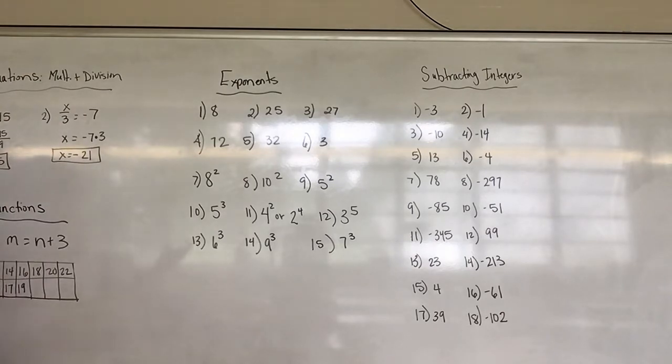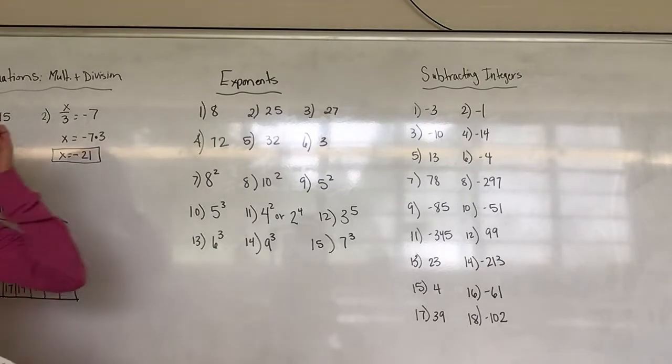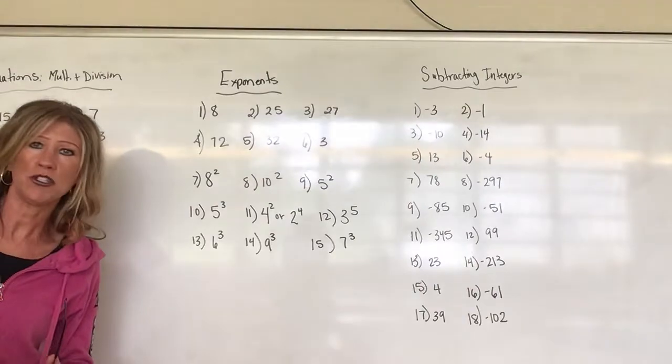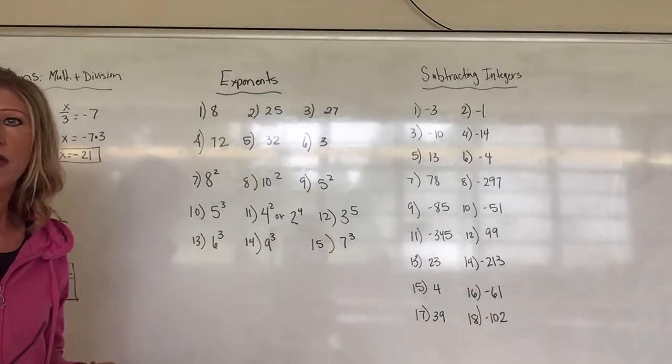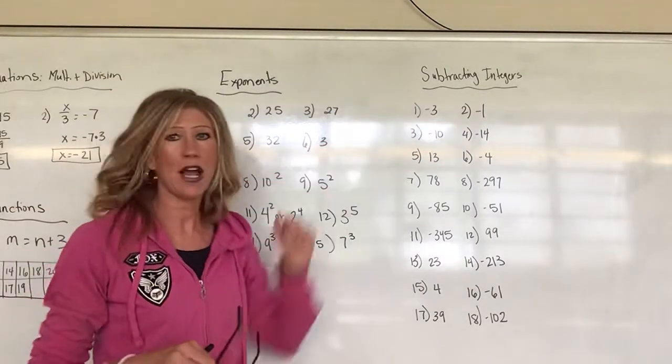Number 13 is 6 to the third power, number 14 is 9 to the third power, and number 15 is 7 to the third power. So let's move on now. If you got any of those wrong, go back and look, write down the right answer and maybe see what you did wrong.